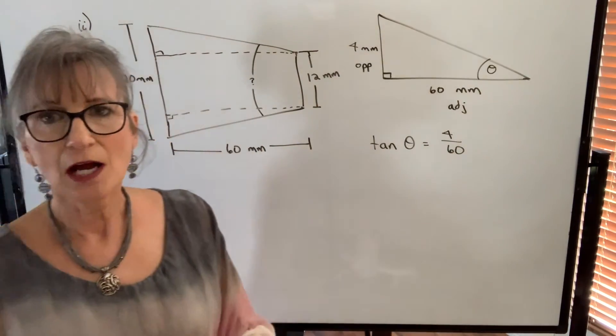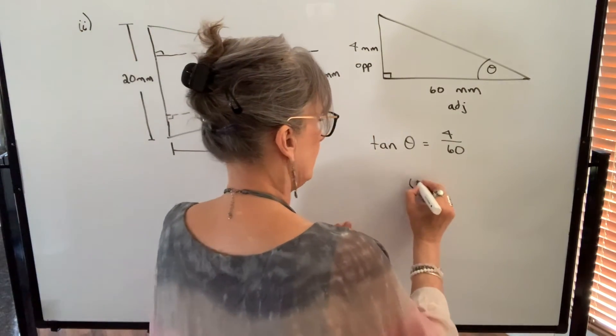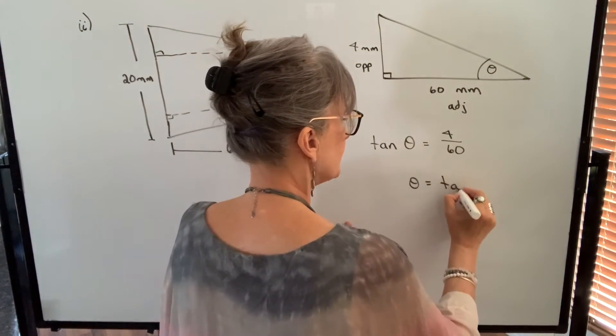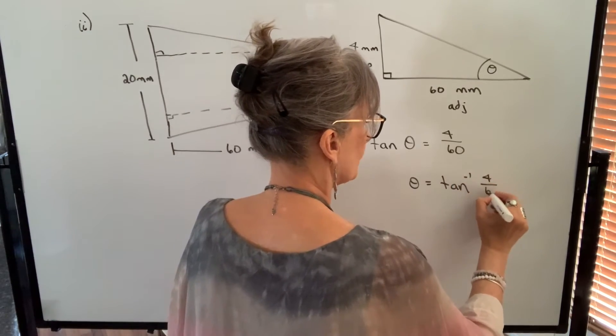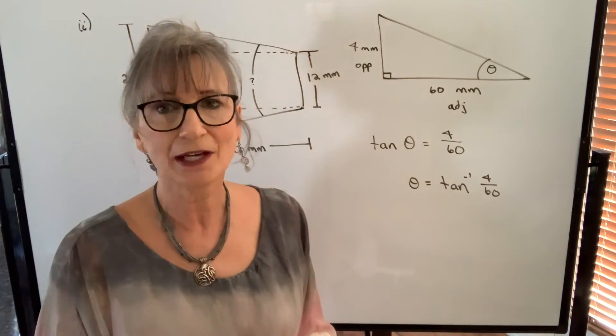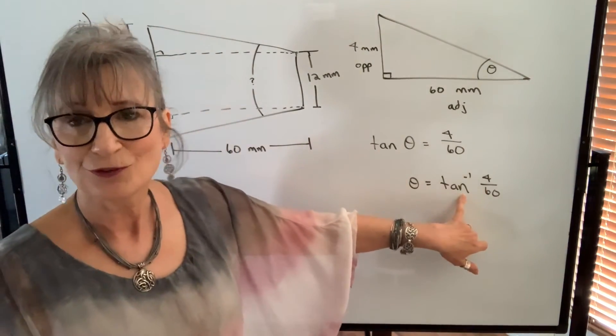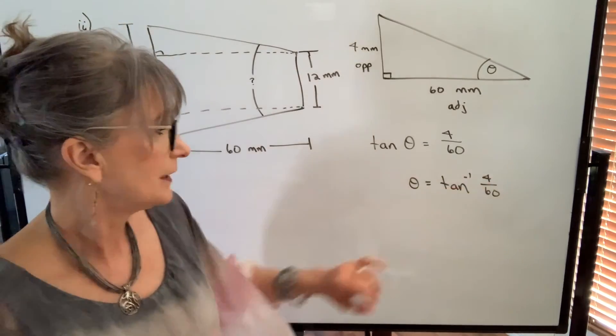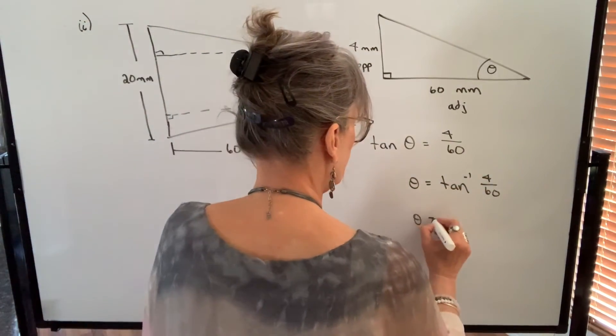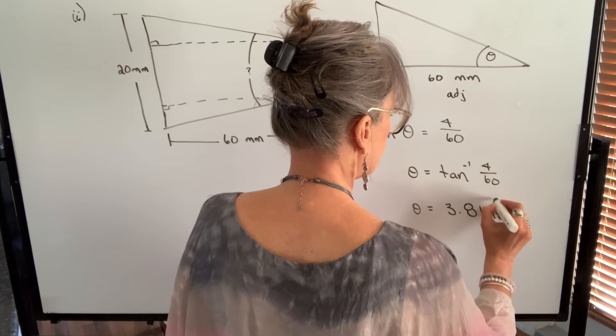And this time I'm finding the angle so I have to use my inverse tan function. My angle theta will equal the inverse tan of 4 over 60. You could reduce that if you want to 1 over 15. It's not going to matter. So on your calculator know how to use the inverse tan function. And when you punch that in you should get 3.814 degrees.